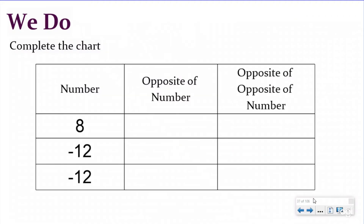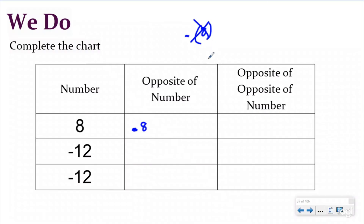Let's do the We Do problem and complete this chart together. Starting with eight — the opposite of it would be negative eight, so I put the negative sign in front of the positive to make it negative eight. You don't have to write the parentheses here because you don't have two negative signs — it's not going to be as confusing visually. Now if I wanted the opposite of that, I have negative eight; I put it in parentheses and put a negative sign in front to show I want the opposite of the opposite, which is positive eight. The opposite of positive eight would be negative eight, and the opposite of negative eight would be back to positive eight.